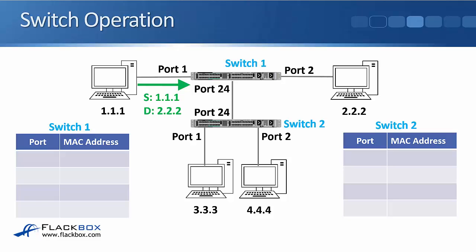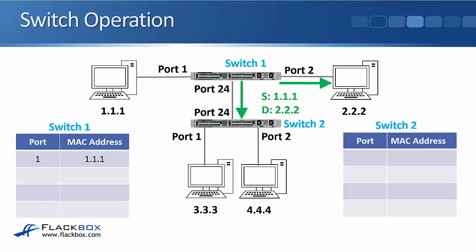Then host 1.1.1 sends a frame in with a destination MAC address of 2.2.2. Switch 1 will learn that 1.1.1 is available on port 1 and put that information into its MAC address table. It will then flood the frame out all ports because it's unknown unicast — it doesn't know where 2.2.2 is yet — so that will get sent out both port 2 and port 24. When it comes into switch 2, switch 2 will do the same thing and flood out all ports, sending it out port 1 and port 2 as well. Switch 2 will also update its MAC address table because it learned that 1.1.1 was reachable through port 24, since that's the port the frame came in on.